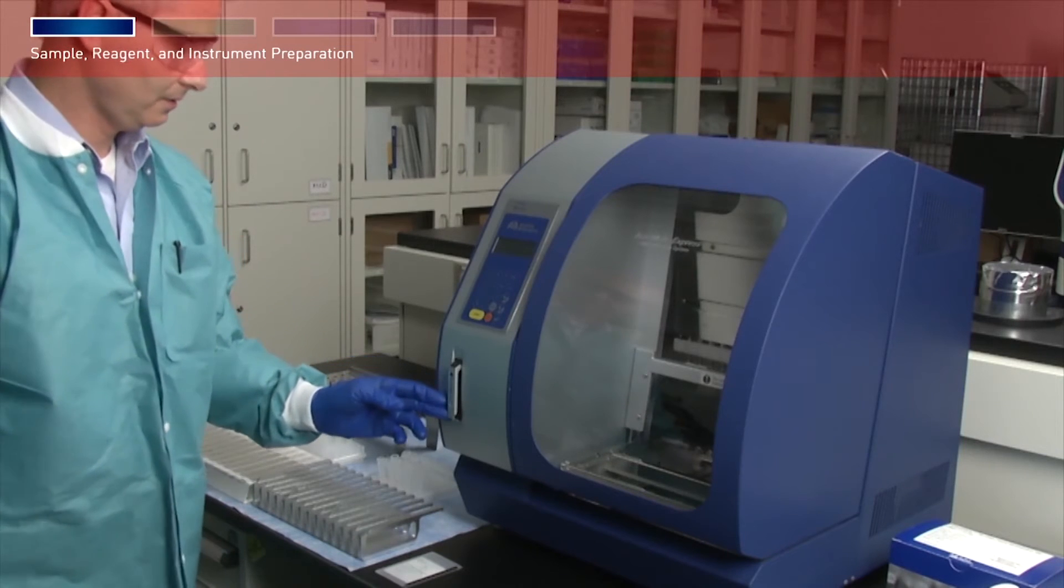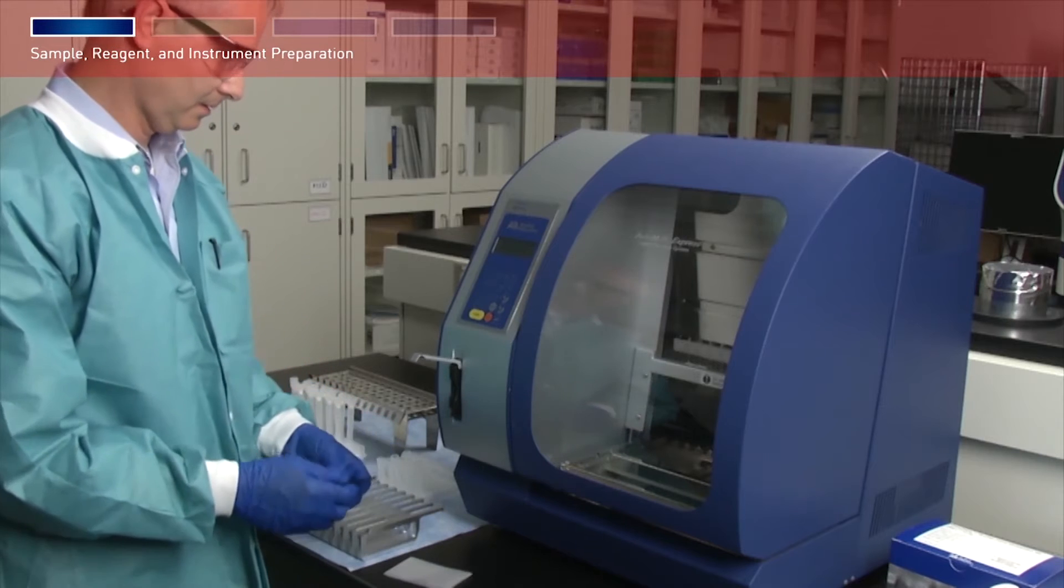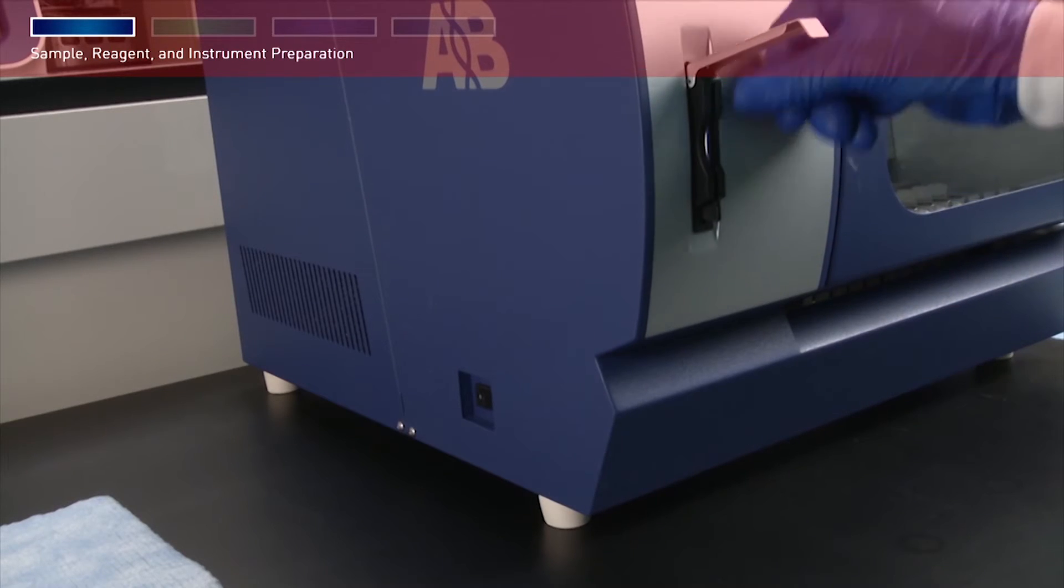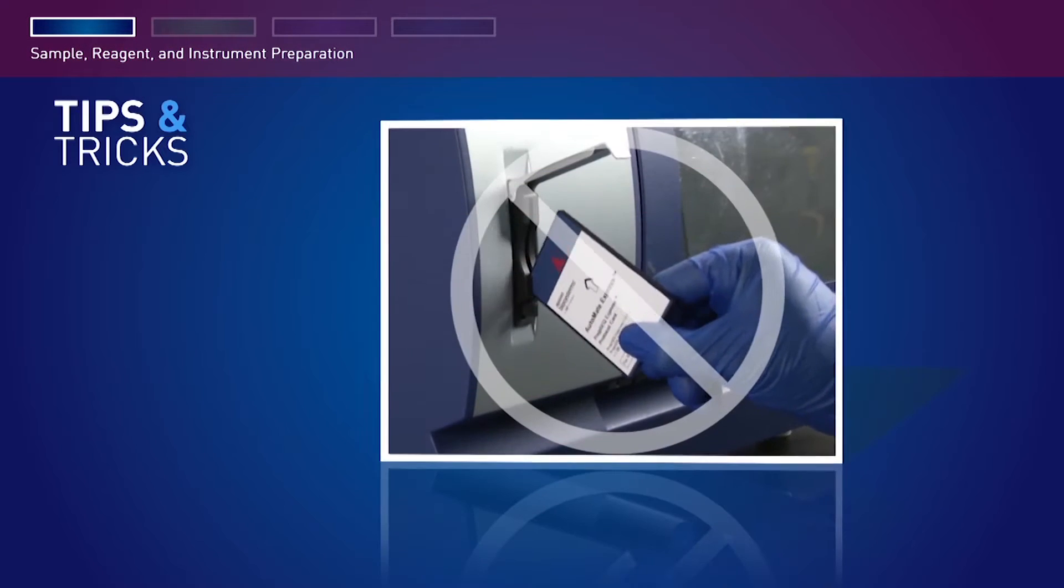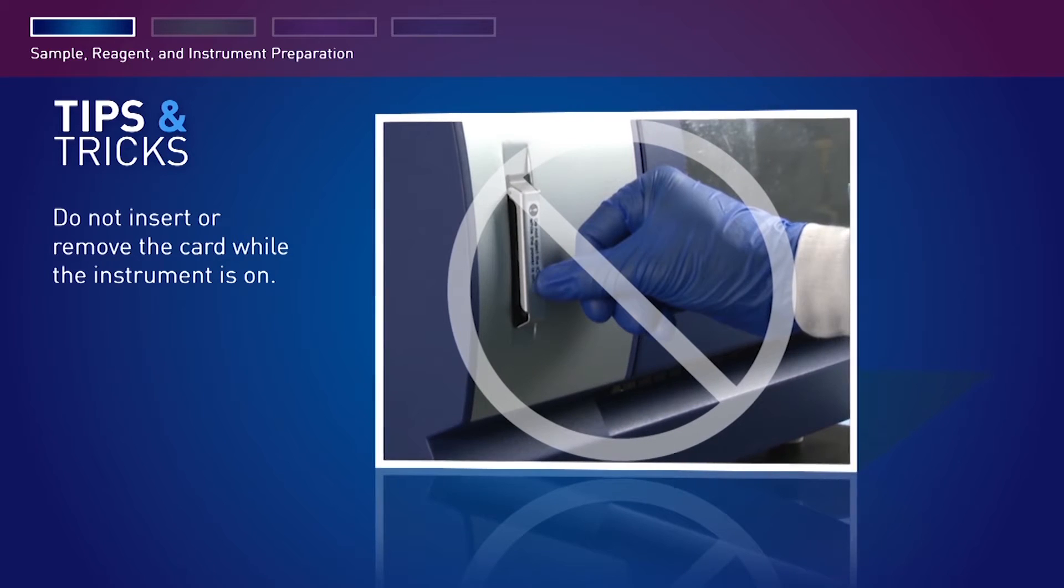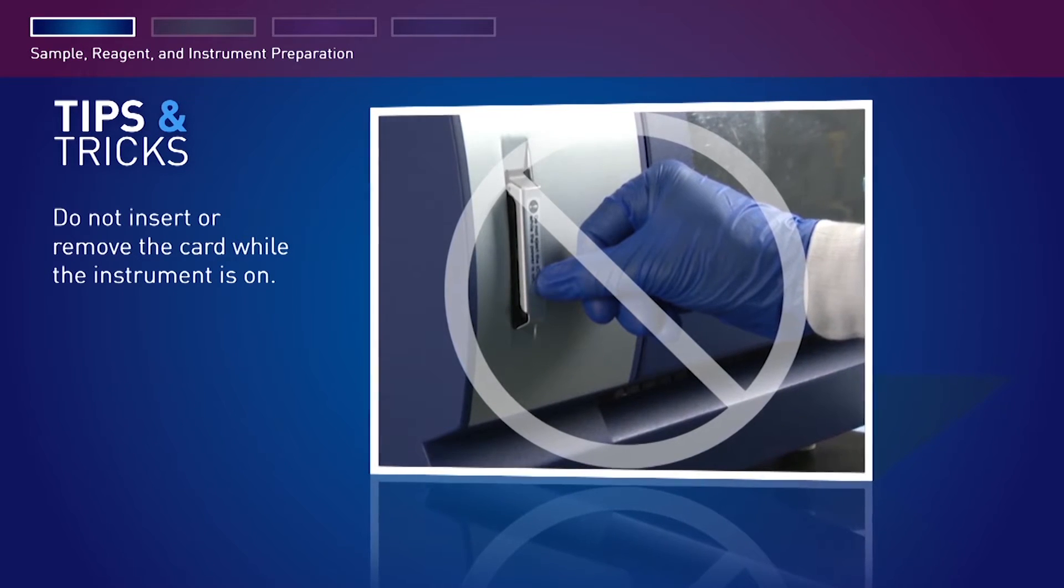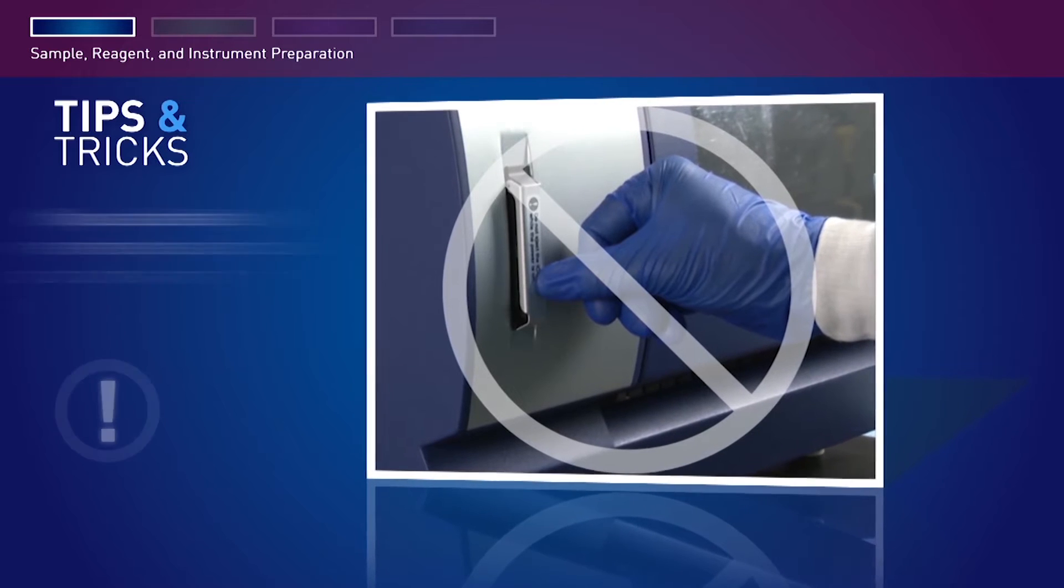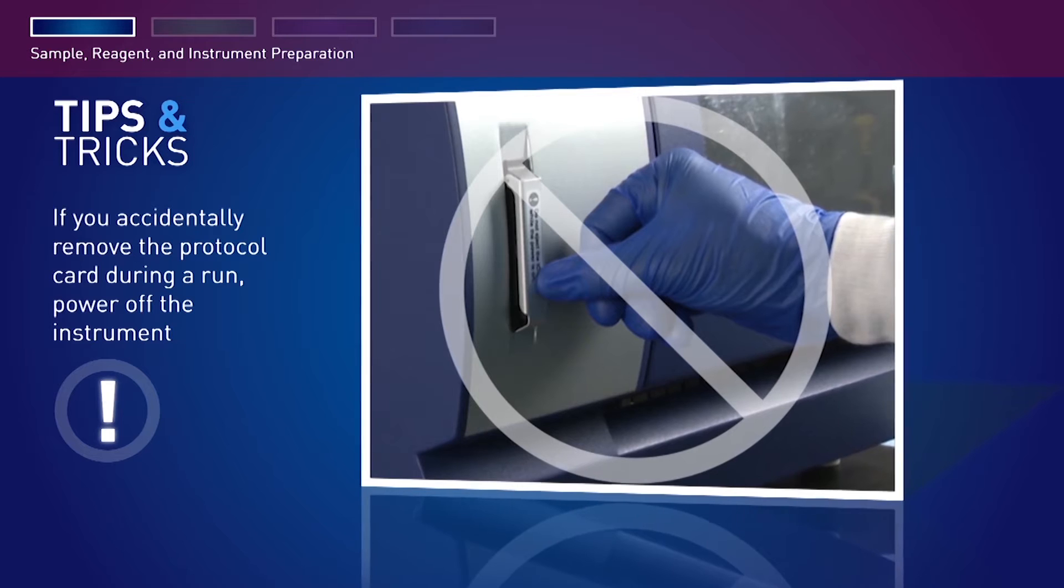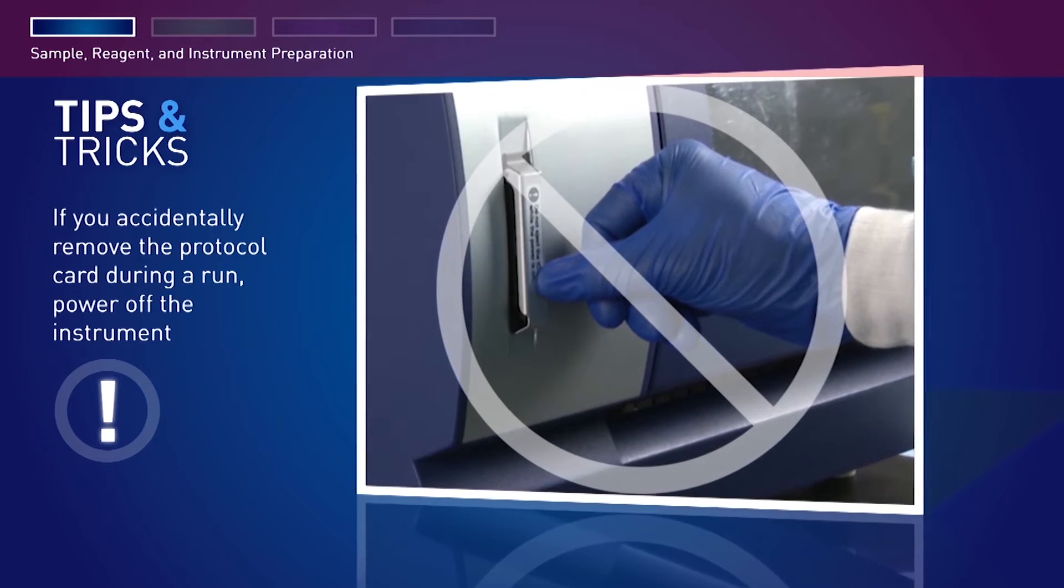Open the card slot and insert the PrepSeek Express kit protocol card in the slot with the arrow pointing toward the instrument and the card label facing left, then close the card slot. Do not remove or insert the protocol card while the instrument is on. Removing the card stops the run and may cause instrument data file loss. If you accidentally remove the protocol card during a run, power off the instrument immediately to minimize potential for instrument data file loss.